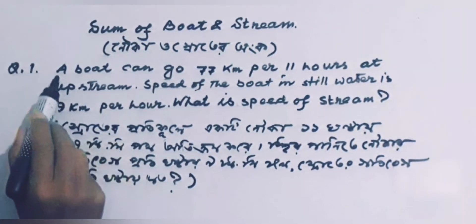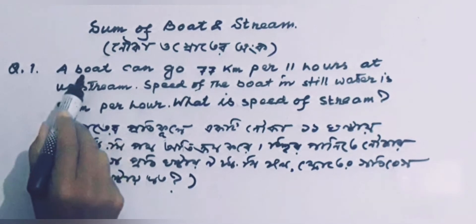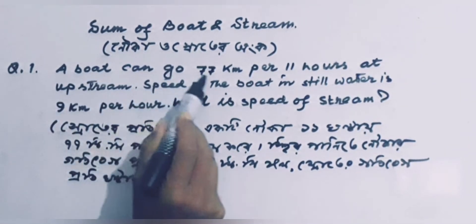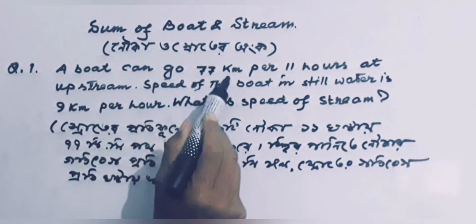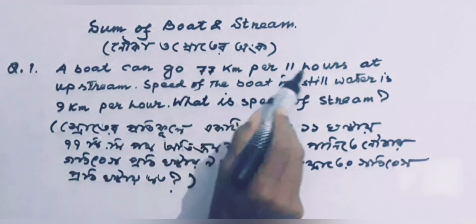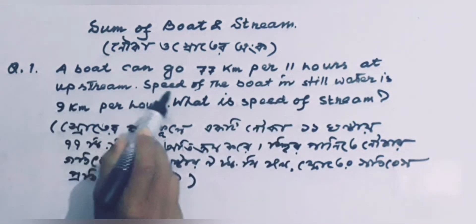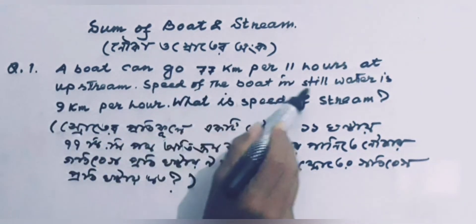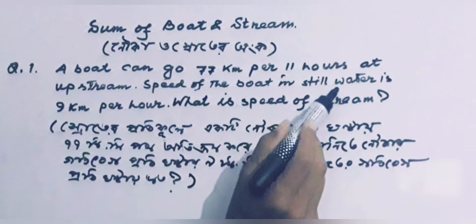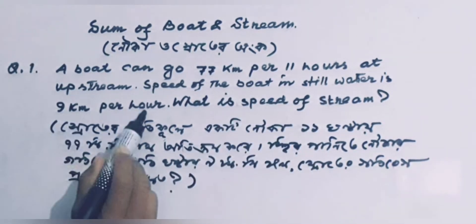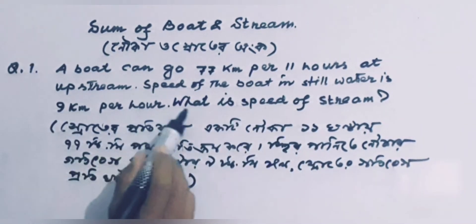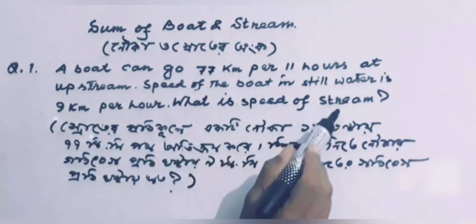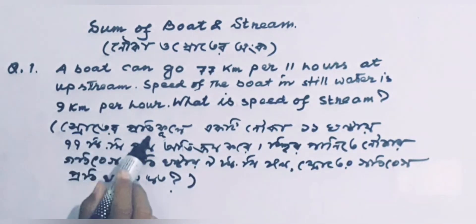Question 1: A boat can go 77 km in 11 hours upstream. The speed of the boat in still water is 9 km per hour. What is the speed of the stream?